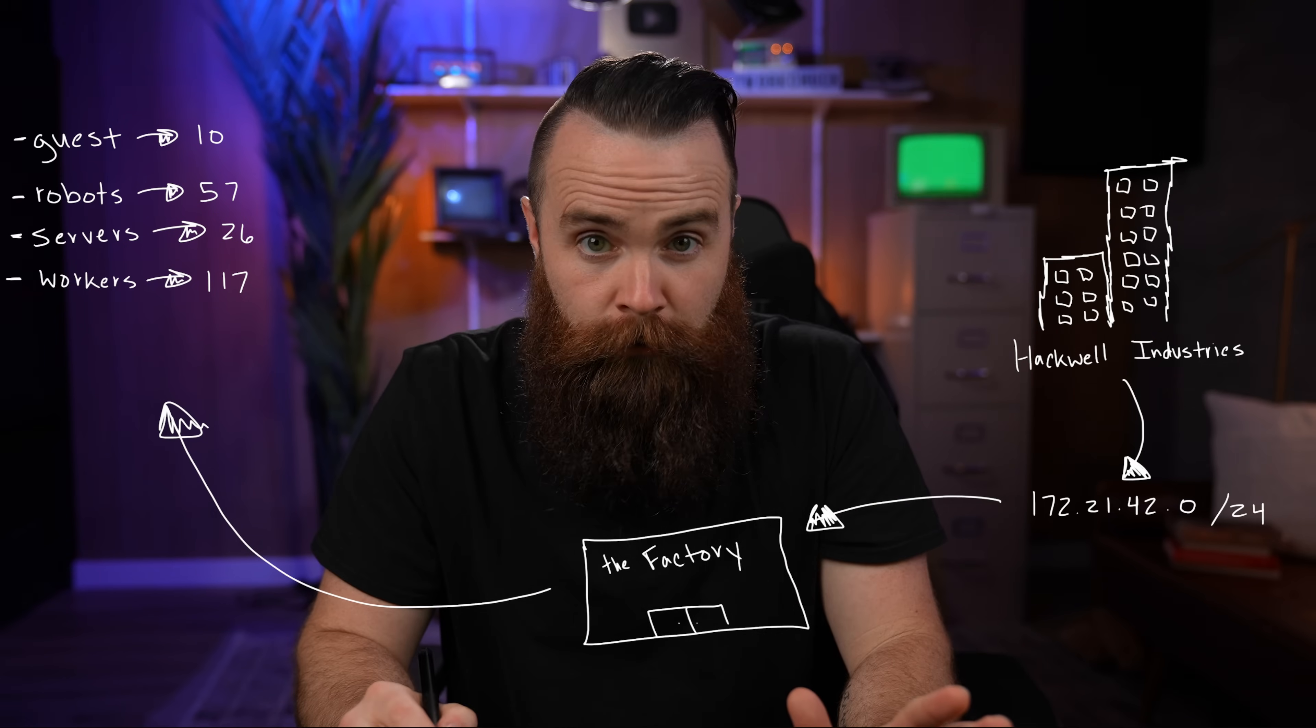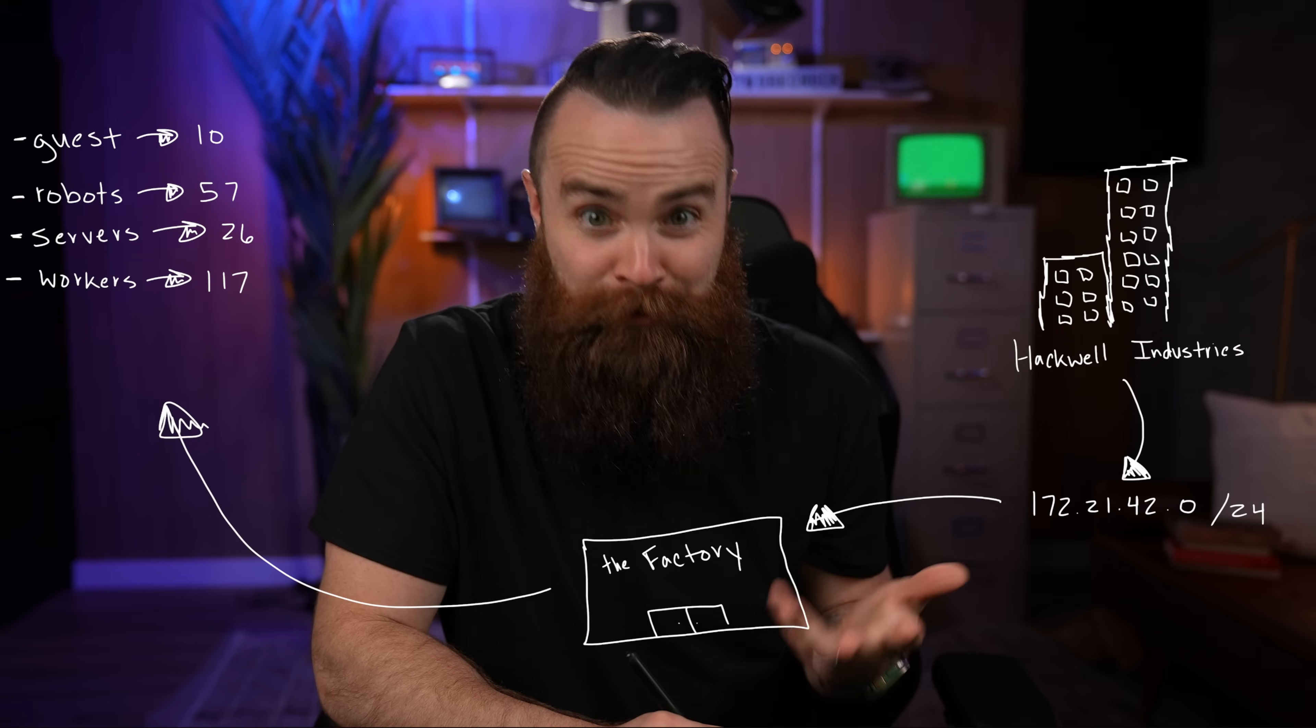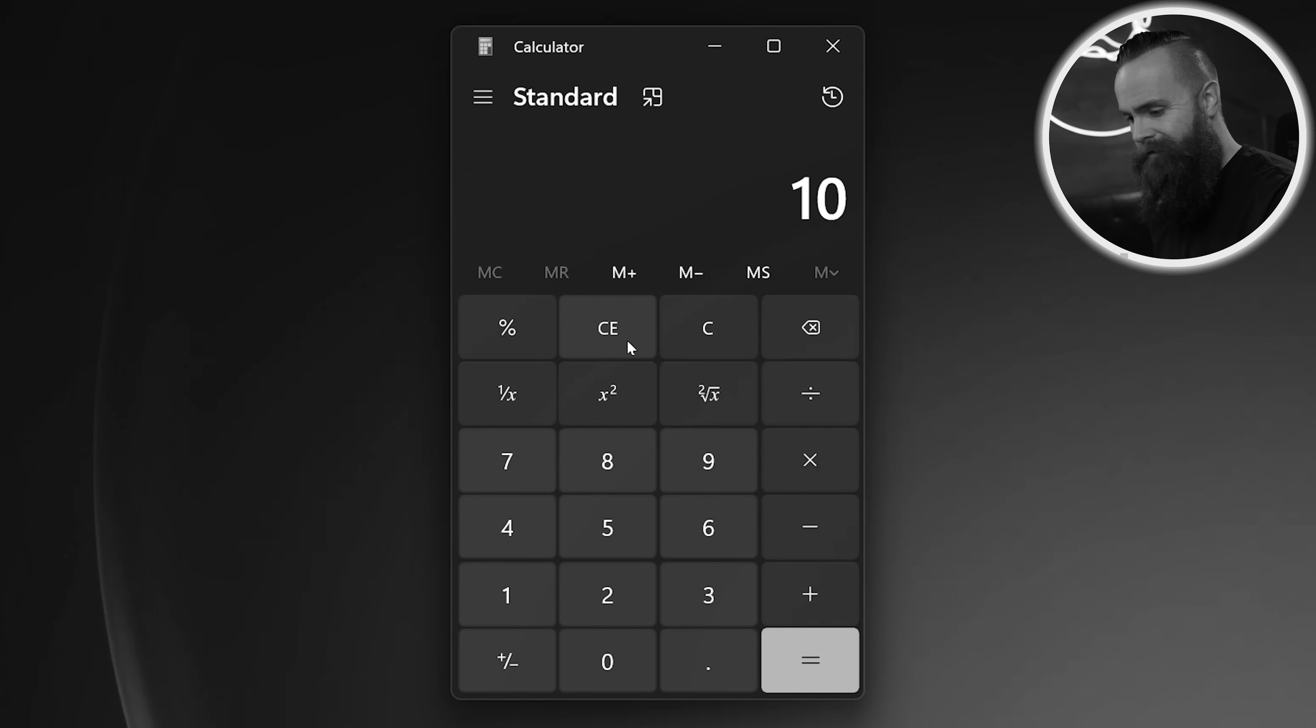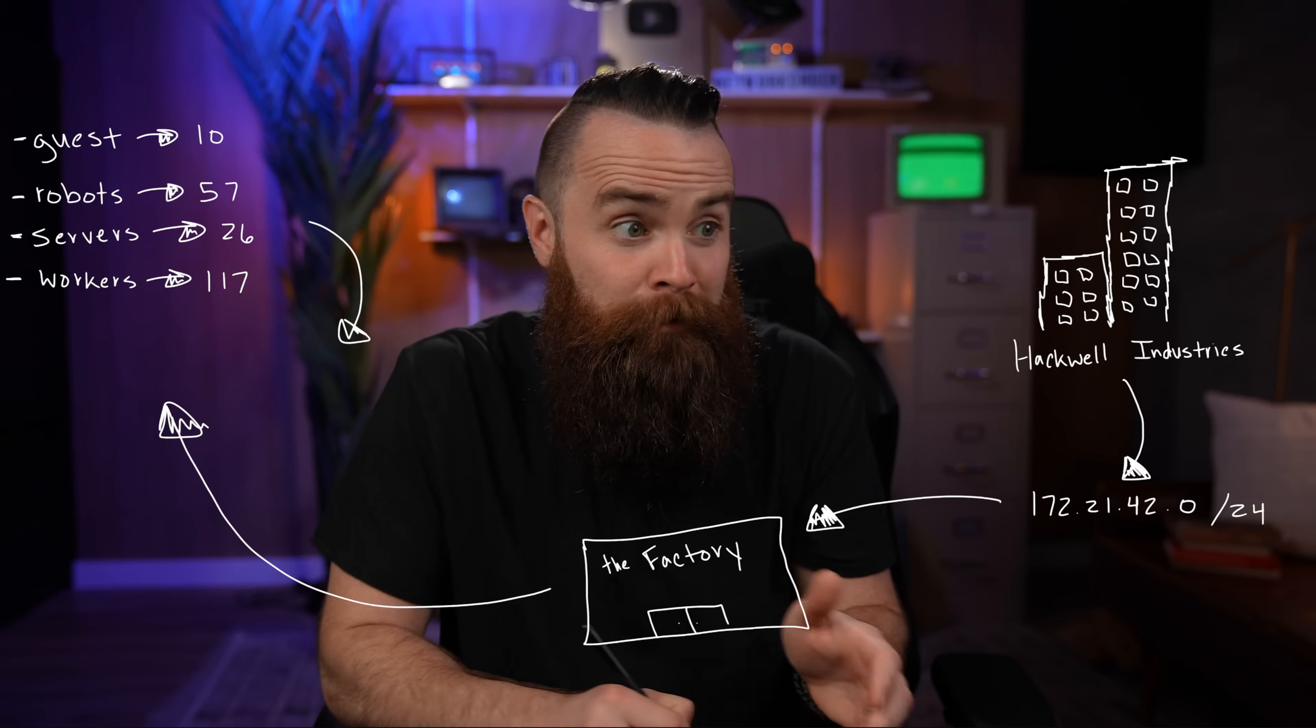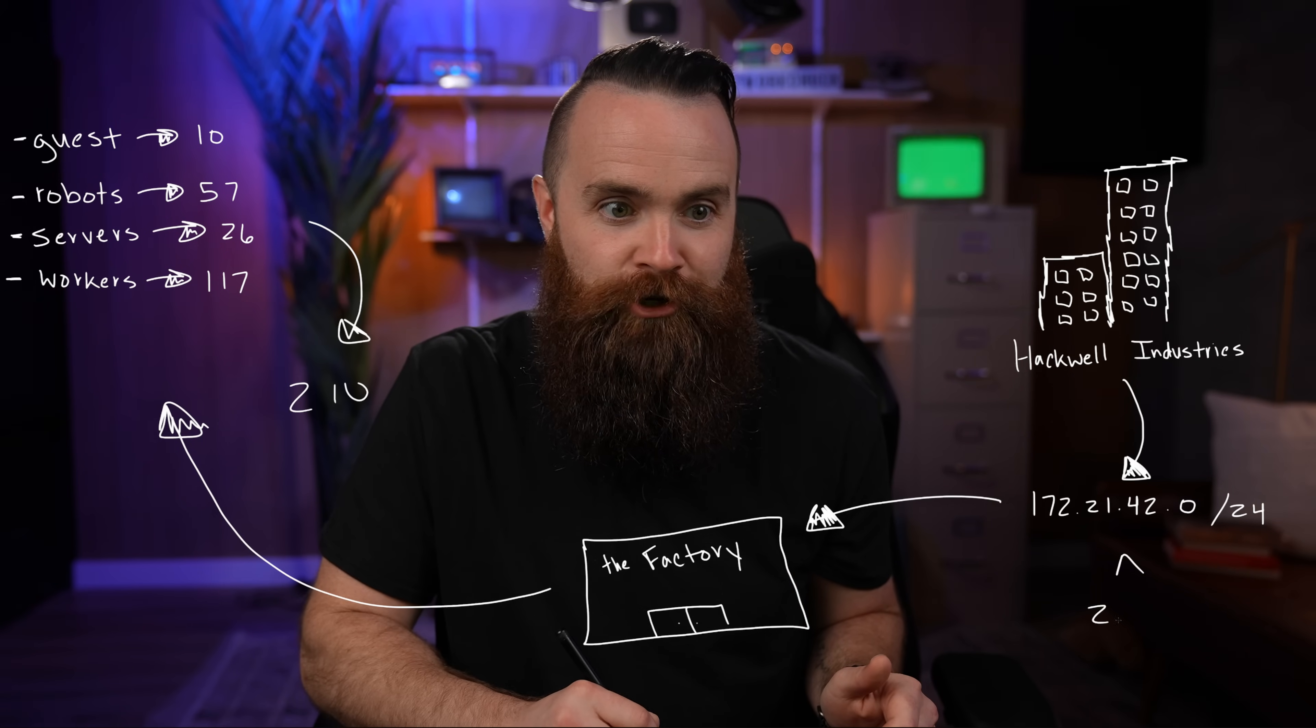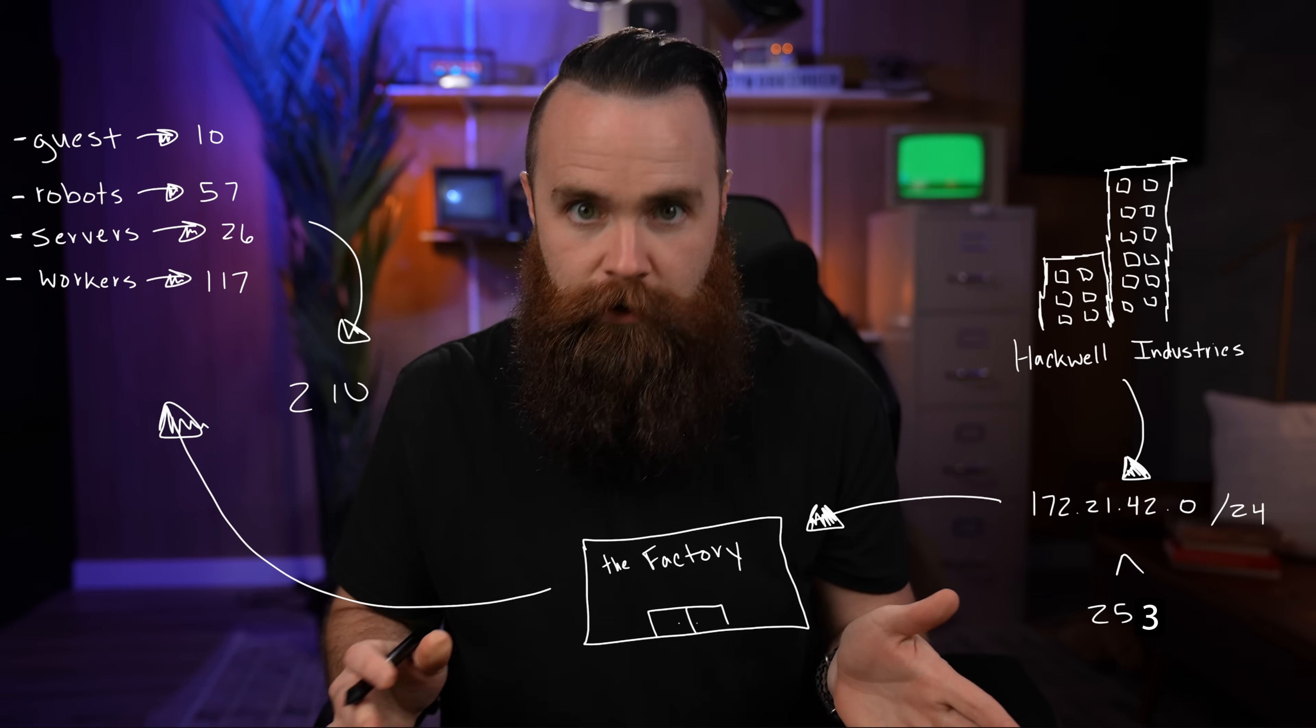So let's look at our networks and tackle our problem. Each one of these has different host requirements, totaling roughly about 257, 526, 210 hosts, which is good because the network we were given can only accommodate 253 hosts in a slash 24. So it's possible, but how do we do it? Here's how we do it.